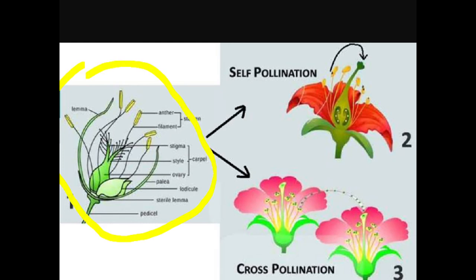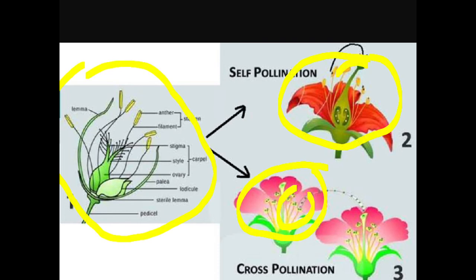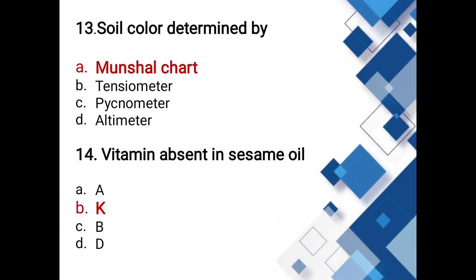Soil color is determined by which chart? Options: Munsell chart, tensiometer, pycnometer, altimeter. The answer is the Munsell chart. The Munsell chart has hue, value, and chroma parameters, and includes colors such as red, yellow, blue, and green.